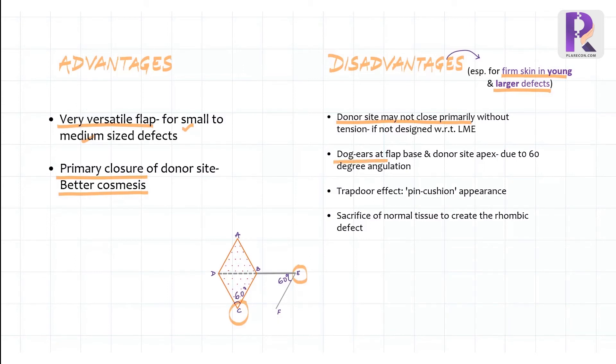The third problem arises due to the closed nature of the final suture line after inset, which is the three sides of the rhombus. So it gives rise to a trapdoor effect or pincushion appearance due to the contracture of the suture line scar. Finally, we may have to sacrifice some portions of normal skin to give the defect the rhombic shape.